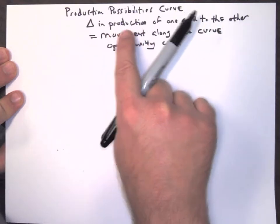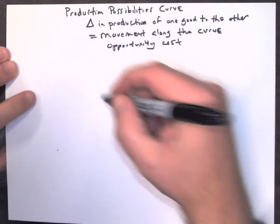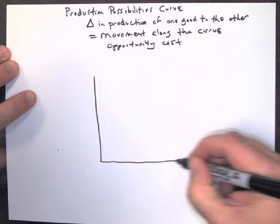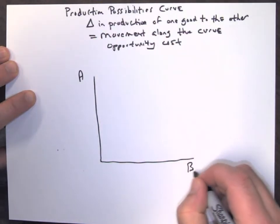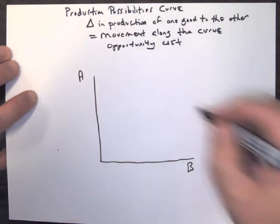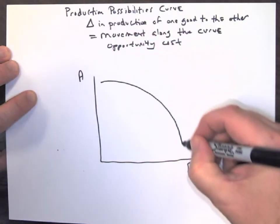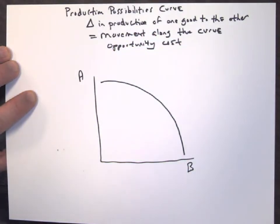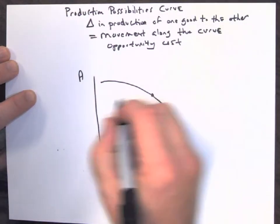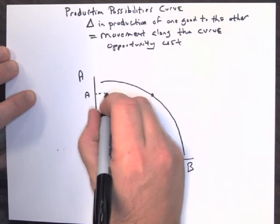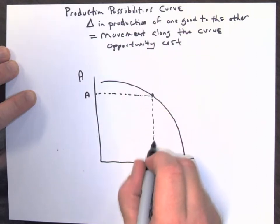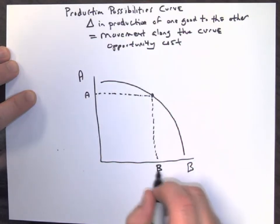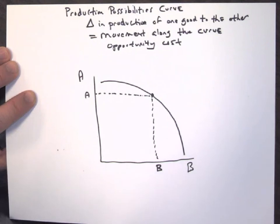Anytime we have a change in production of one item to another — let's say we're going to start with item A and item B, and that can be any goods or services — we're going to have a production possibilities curve. Say we're producing this much of item A; we go over and that means we're going to be getting this much of item B.